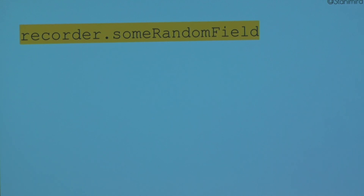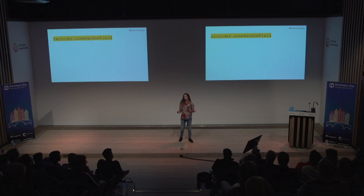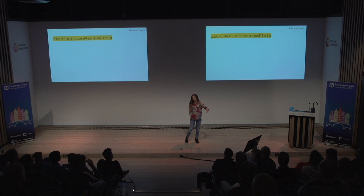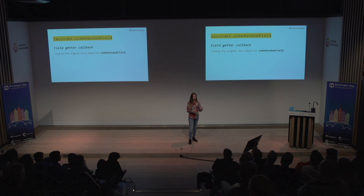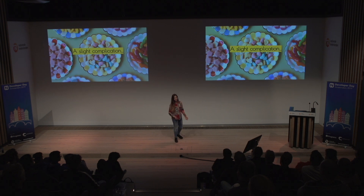We return the proxy object back to the JavaScript world. While building a NativeScript app, we don't care that this is a proxy object — we just have a recorder and think it's the created recorder in the Java world. But it is actually a proxy. So when we try to get some field from that object, we trigger the field getter callback, whose job is to call the original Java object and get the field back.